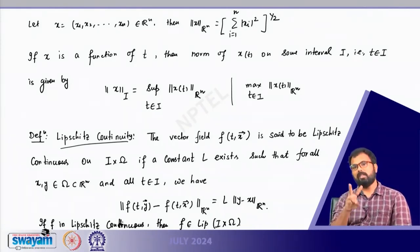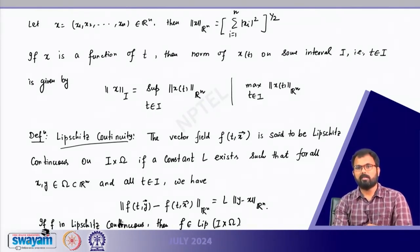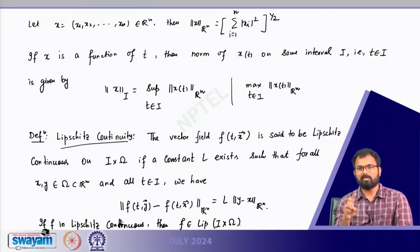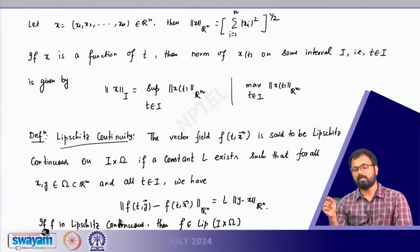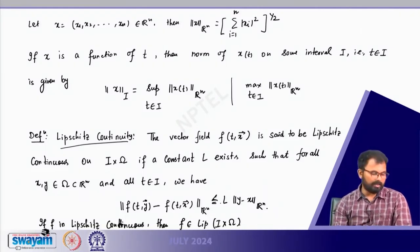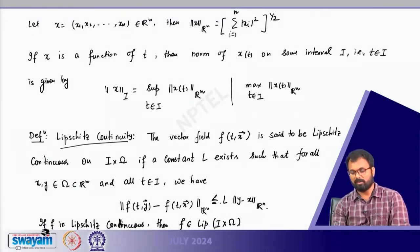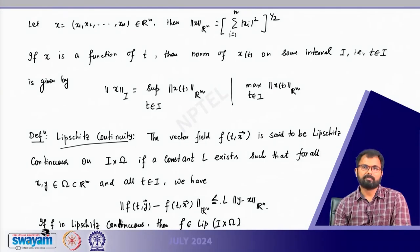Lipschitz continuity means: for any two arbitrary points from the domain, the norm (or mod in ℝ) of f(t,y) − f(t,x) must be less than or equal to L times |y − x|. In ℝⁿ: ‖f(t,y) − f(t,x)‖_{ℝⁿ} ≤ L ‖y − x‖_{ℝⁿ}. This is the definition of Lipschitz continuity.